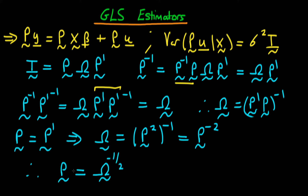So the explicit form of our transformation matrix is omega to the power minus one half — the variance-covariance matrix raised to the power minus a half. Let's check that it works. To verify, we require that the variance of P times U given X equals sigma squared times I. We evaluate this for the explicit case where P equals omega to the power minus one half.